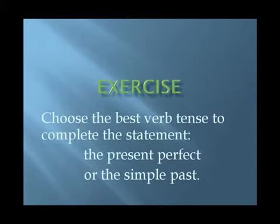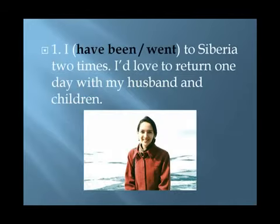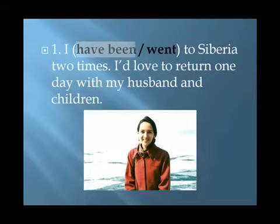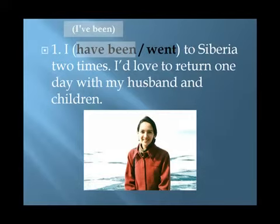Exercise: choose the best verb tense to complete the statement — the present perfect or the simple past. Number one — read the statement to yourself and then I'll tell you the answer. Answer: I have been — or I've been — to Siberia two times. I'd love to return one day with my husband and children. I said 'I've been' because there's a suggestion of a future visit. I don't think the simple past is incorrect, but I think the present perfect is the better choice here.